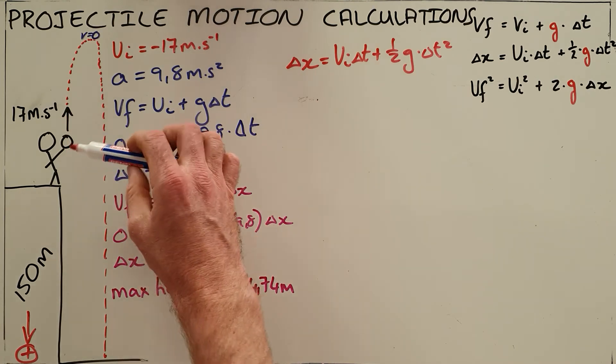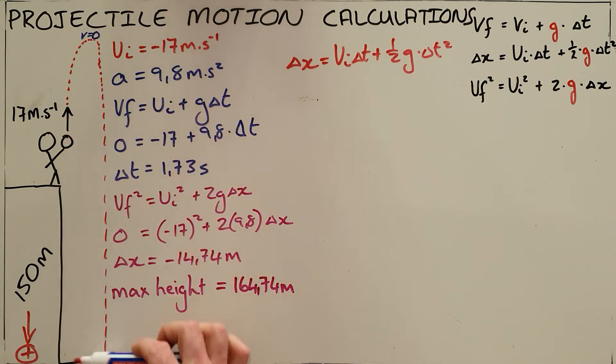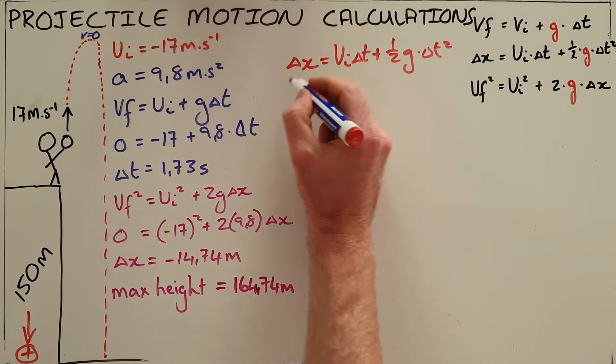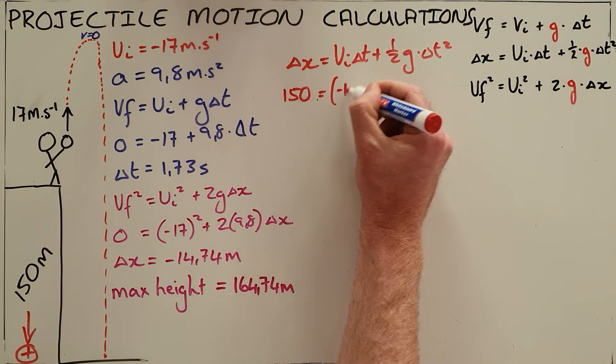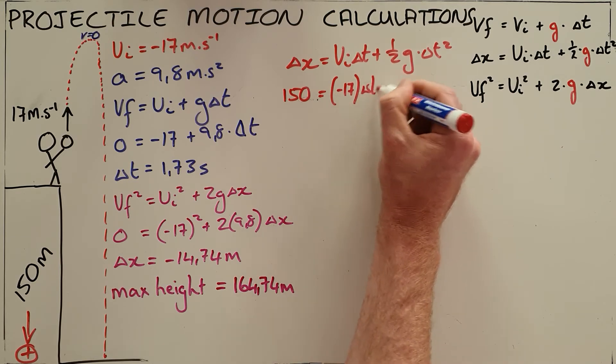We know displacement is distance from where it starts to where it ends, which is only 150 meters, and we substitute those values in again, keeping in mind that the directions here are important.